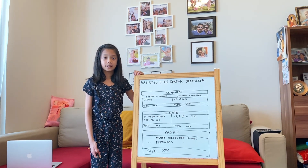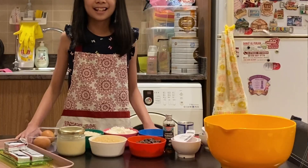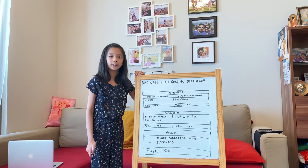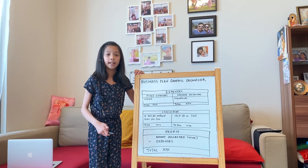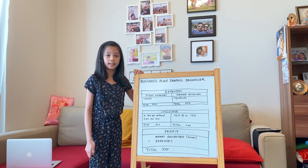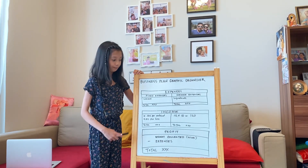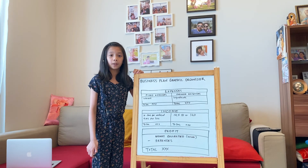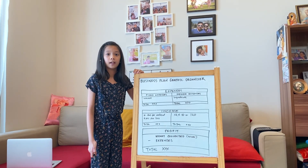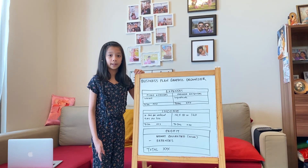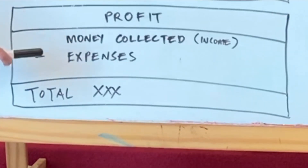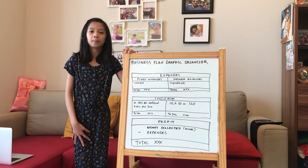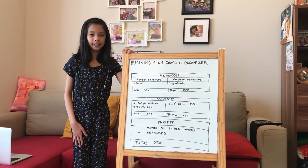Examples of variable expenses are the ingredients used to make the oat bars. Income is the money coming in. Profit in running a business does not end after collecting money — the basic formula is: money collected minus expenses equals profit.